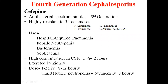The 4th generation cephalosporin Cefepime has an antibacterial spectrum similar to the 3rd generation. Introduced around the 1990s, it is highly resistant to beta-lactamases and has activity against many organisms resistant to earlier drugs, including Pseudomonas aeruginosa, H. influenzae, Streptococcus pneumoniae, and Staphylococcus aureus.